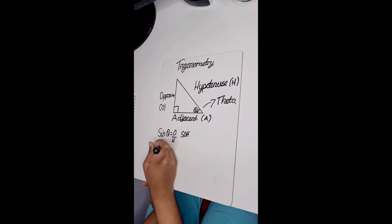Cos theta equals adjacent over hypotenuse.